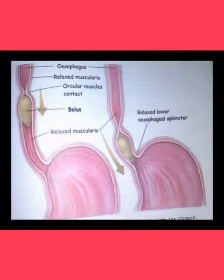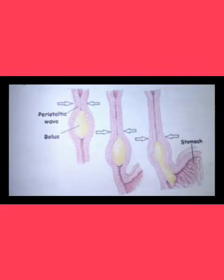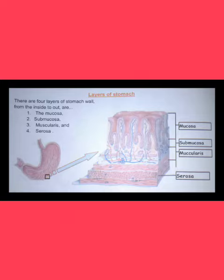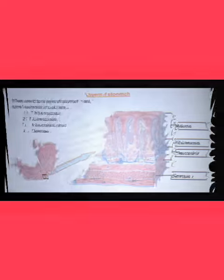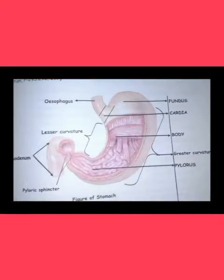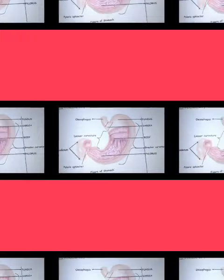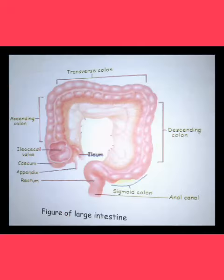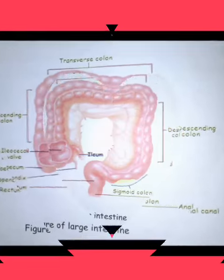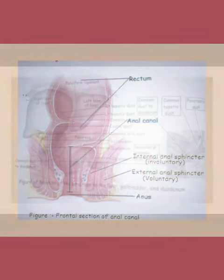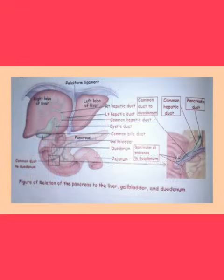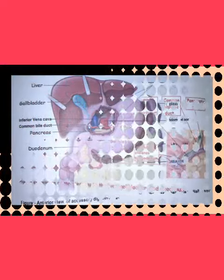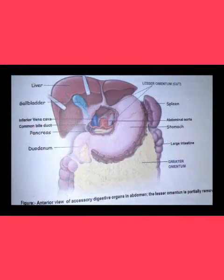Parts and organs of the gastrointestinal (GI) tract or alimentary canal are: the mouth, pharynx, esophagus, stomach, small intestine, large intestine, rectum, and anal canal.